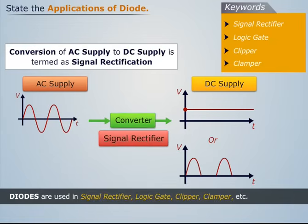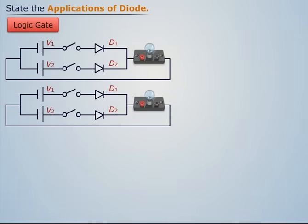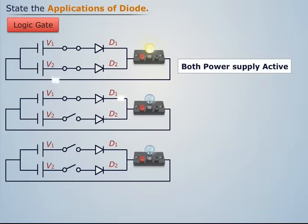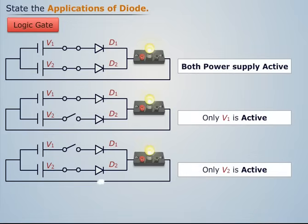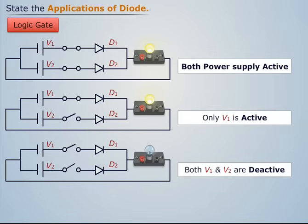Logic gate is a circuit which consists of a diode, two power supplies, and a bulb. The diode is placed between the power supply and bulb. We notice that the bulb continues to glow till both or any of the power supplies is active, and it stops glowing when both power supplies get deactivated. Thus, the diode allows current to pass through the bulb till any or both power supplies are active.